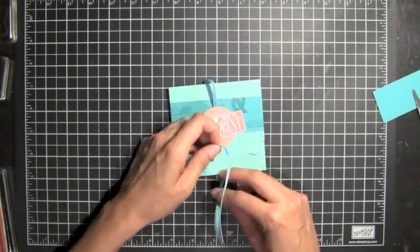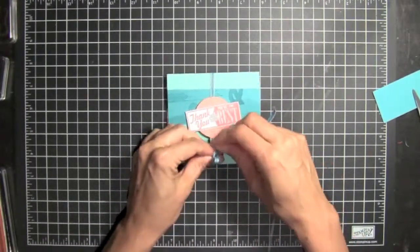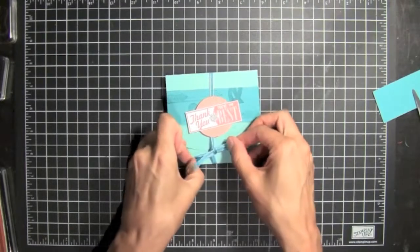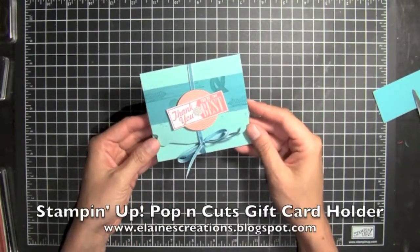So fun little project using the Pop and Cuts die to create a gift card holder. The last step is just to tie a fun little bow and there you have your project. Thanks for watching.